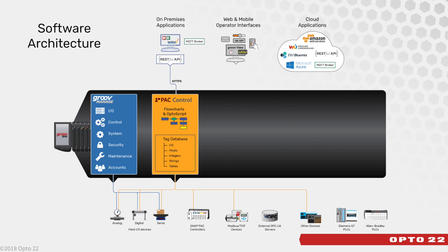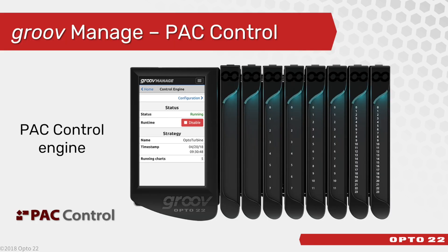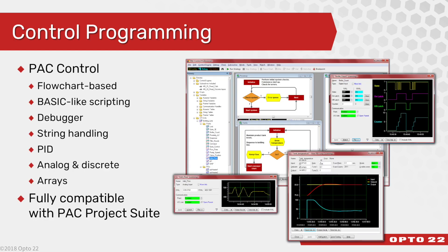With PAC Control, it's here where we create our tag database and we create our flowcharts and scripting for our control strategy. Within GrooveManage, you can view the status and configuration of the control engine running directly on the Epic controller. Our free PAC Control software development tool has been around for decades, offering the simple elegance of flowchart-based control with up to 64 simultaneously running charts, plus sophisticated scripting for advanced programmers, all coupled to a real-time visual debugger. Support for analog, digital, and string handling remains, plus PID control loops and arrays of many types.